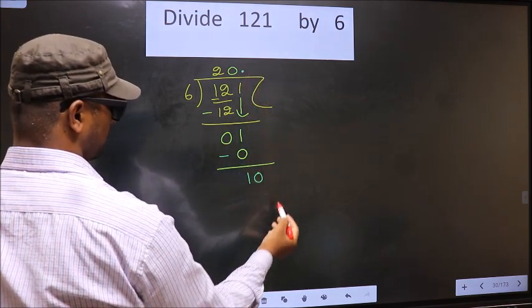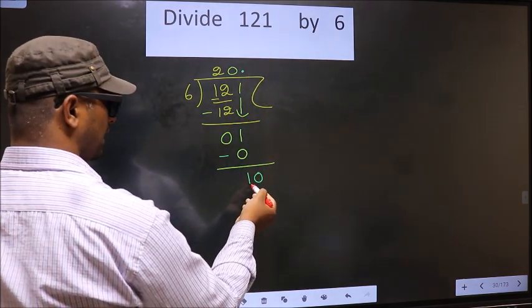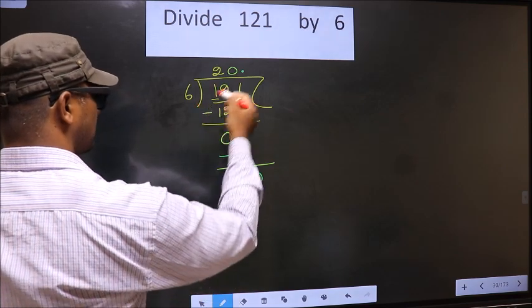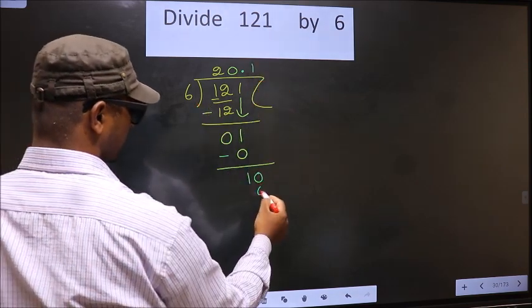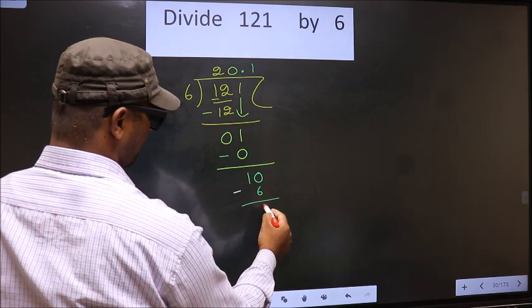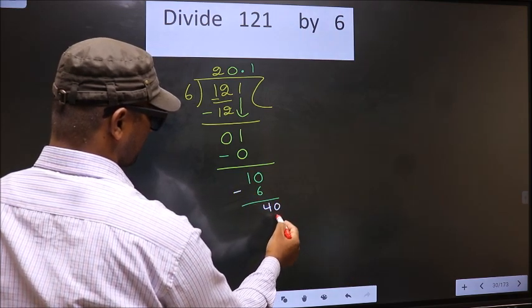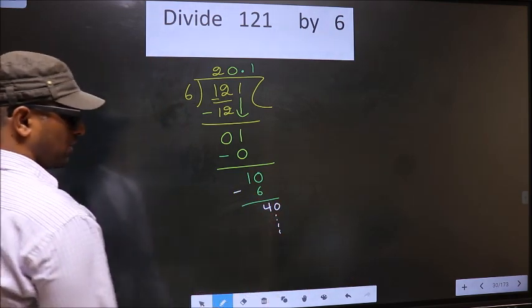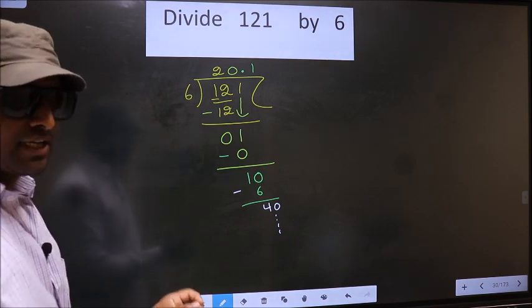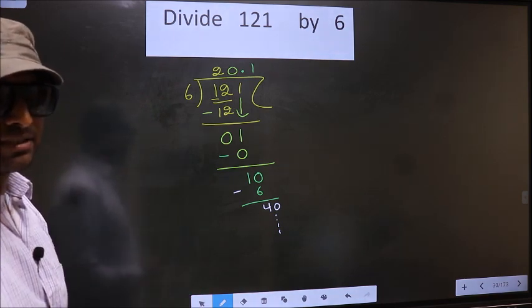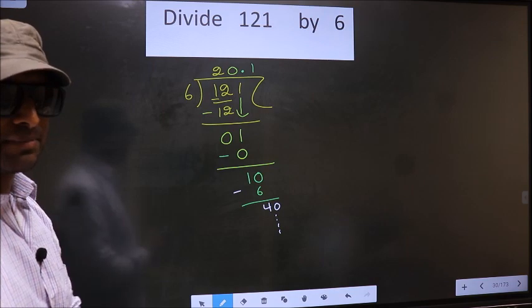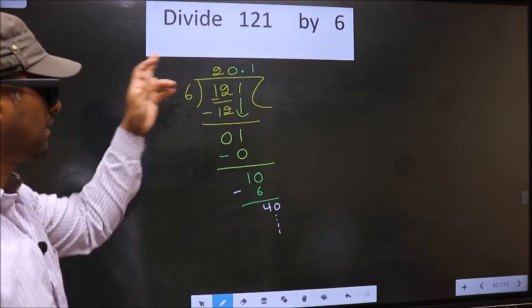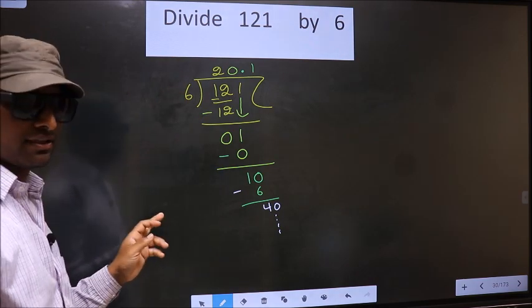and take 0. Now here we have 10. A number close to 10 in the 6 table is 6 times 1, 6. You subtract, you get 4. You take 0, and the division continues. I am not doing that. Did you understand where the mistake happens? You should not do that mistake. Am I clear?